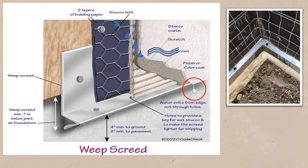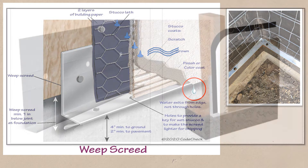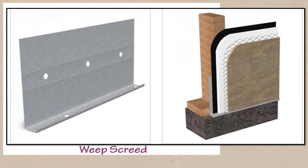The shape of the weep screed can be a V-nose or can be a casing bead with holes. Even the continuous insulation stucco known as one-coat stucco uses a modified weep screed to encapsulate the foam.